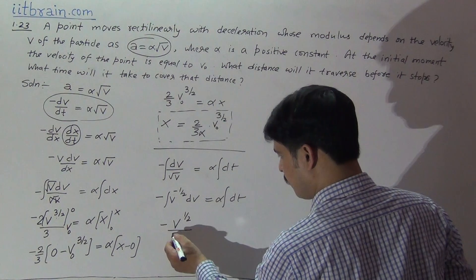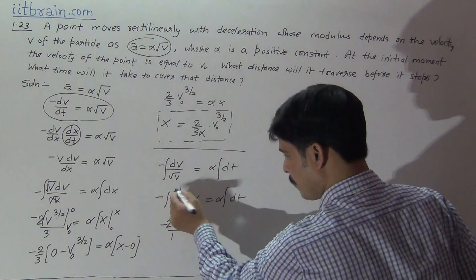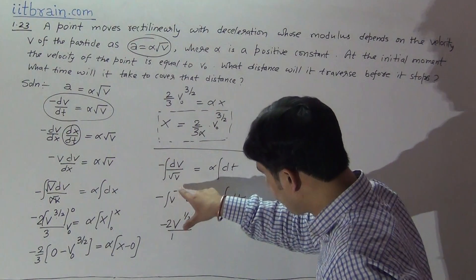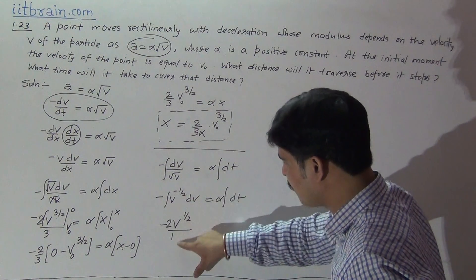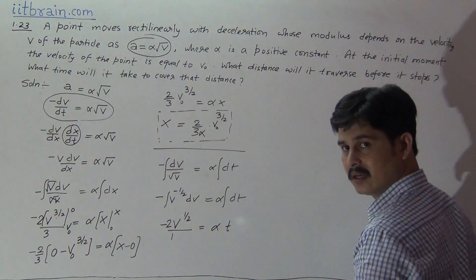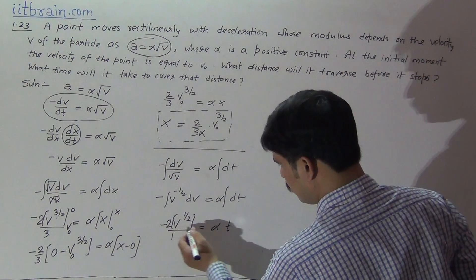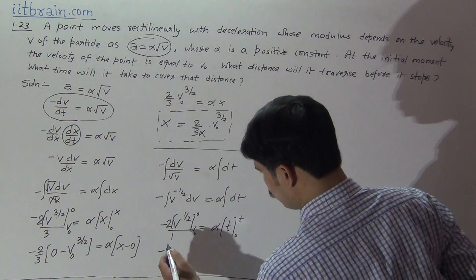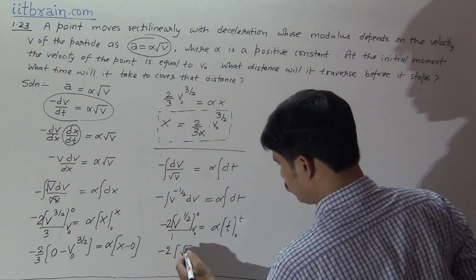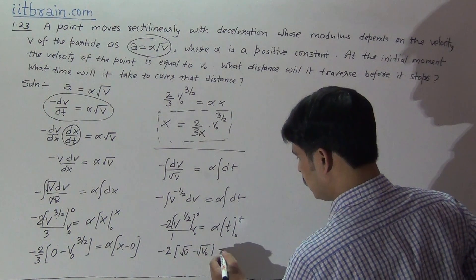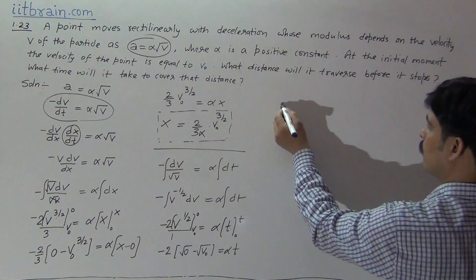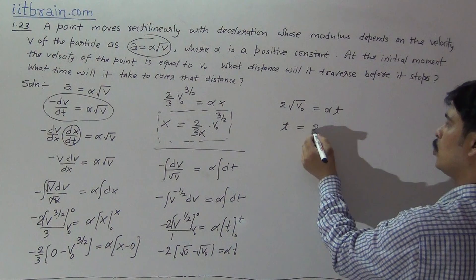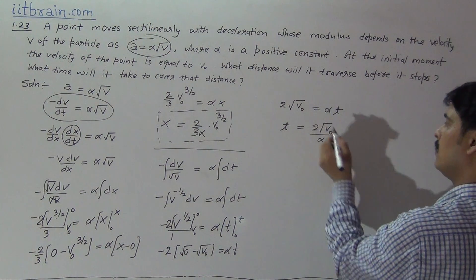The integration of v to the power minus half is v to the power half over half, using the formula x to the power n integrates to x to the power n plus 1 by n plus 1. So it gives 2 root v equal to alpha t. Applying limits from v₀ to 0 for velocity and 0 to t for time, the result is minus 2 times root 0 minus root v₀ equal to alpha t, giving 2 root v₀ equal to alpha t. Therefore time is 2 root v₀ by alpha.